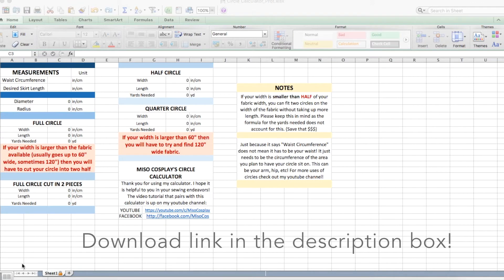I'm going to go ahead and explain each part. So the top here is where you can input your circumference and the length of your skirt, and then the rest of the cells will populate automatically with the numbers that you need.